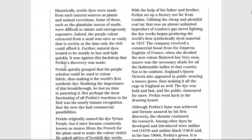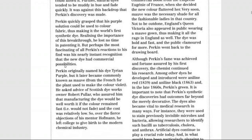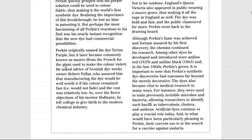Perkin ne samajh liya ke yeh purple solution fabric ko color karne mein istemal ho sakta hai. Is tarah usne duniya mein sabse pehla synthetic chemical dye banaya. Pehle usne is ka naam 'Tyrian purple' rakha, lekin dheere dheere yeh rang 'mauve' ke naam se mashhoor ho gaya — jis tarah 'orange' phal ke naam par rakh diya gaya, isi tarah 'mauve' ke naam se yeh rang jaana jaane laga.